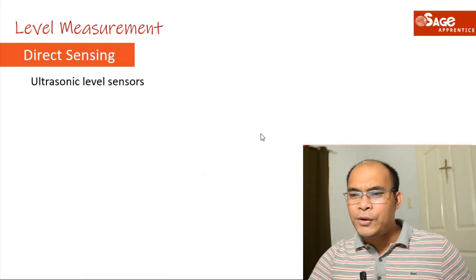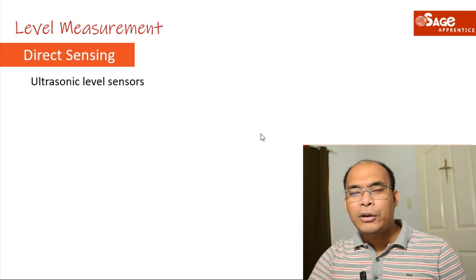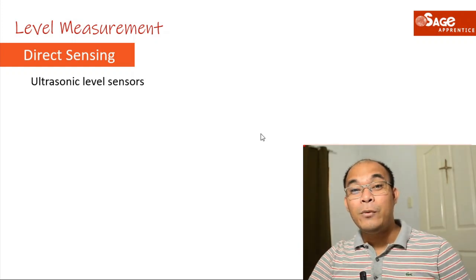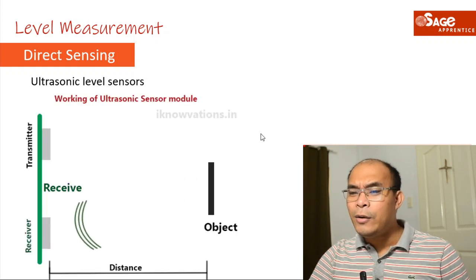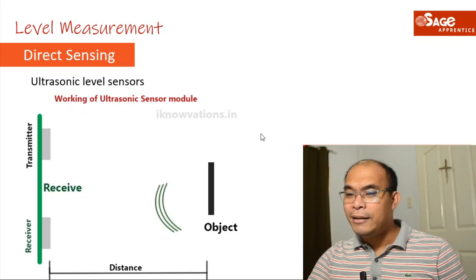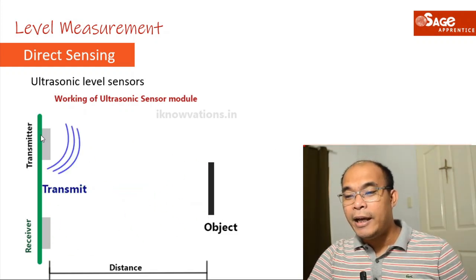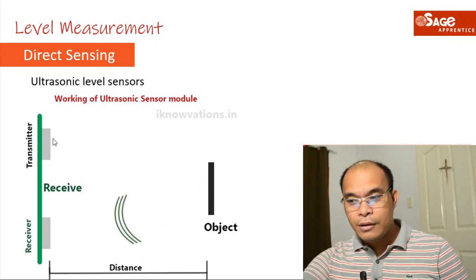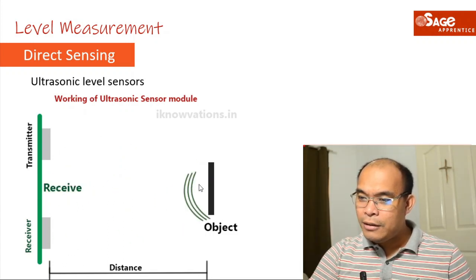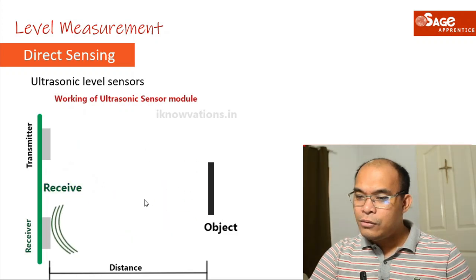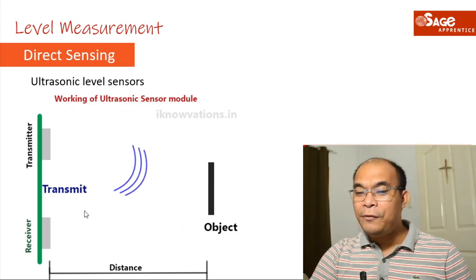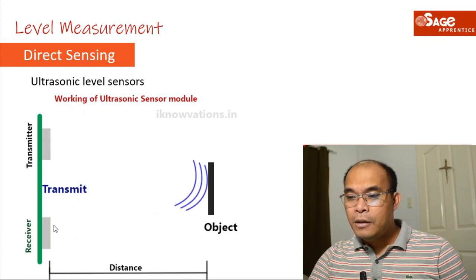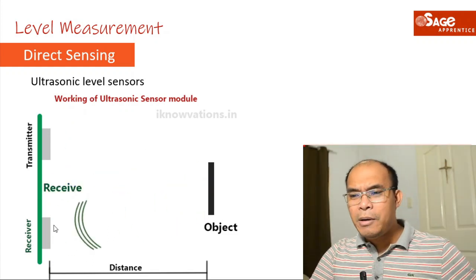Let us now proceed to one of the most common sensors — the ultrasonic level sensor. In our next laboratory session, we will use this type of sensor to measure the level of liquid. The ultrasonic level sensor has two components: a transmitter and a receiver. The transmitter sends sound waves, which reflect off the liquid surface and are received by the receiver.